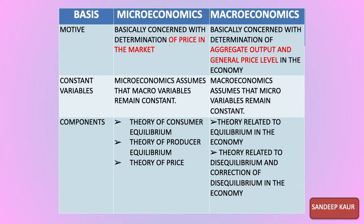Regarding constant variables: in microeconomics, the variable factor is the theory of price. When we are determining the price in the market, we assume that the aggregate output and the general price level in the economy will remain constant. Similarly, in macroeconomics, when we are studying aggregate output and the general price level, we assume that the price in the individual market remains constant.